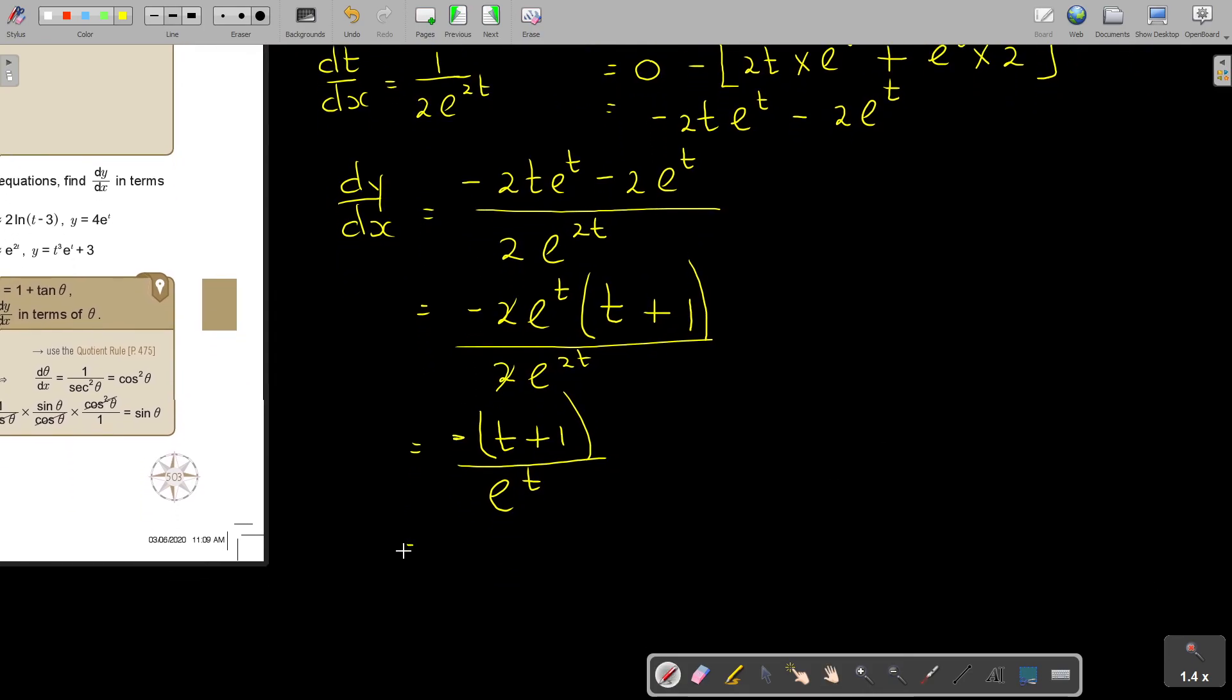Or you can, if you want, you can also say it's t plus 1 over negative e to the power of t. Just don't throw that negative away. It must be, put it either there, because if you put it here, it can be confusing where exactly. So I think put it either on top or at the bottom. It's going to be more clear.